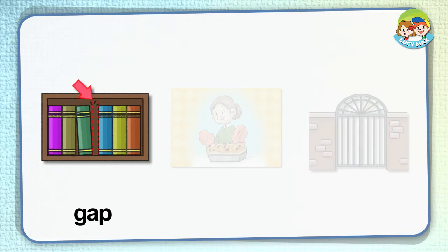Gap. A gap is a space between two things. In the picture, the arrow points to a gap.